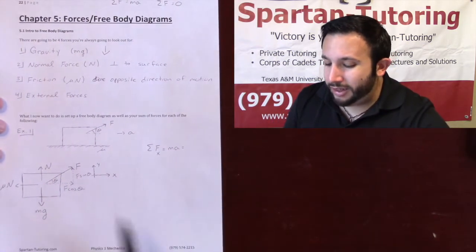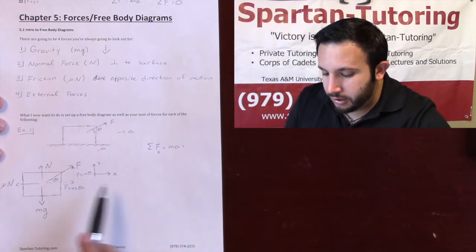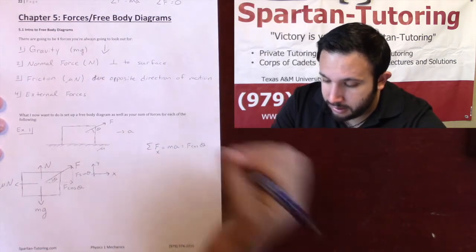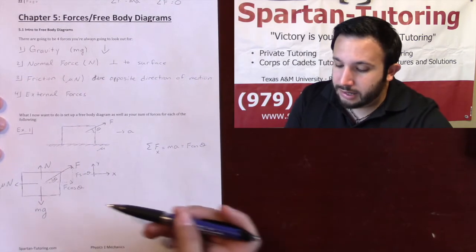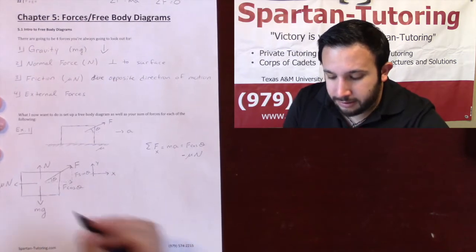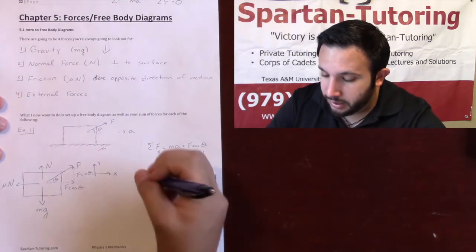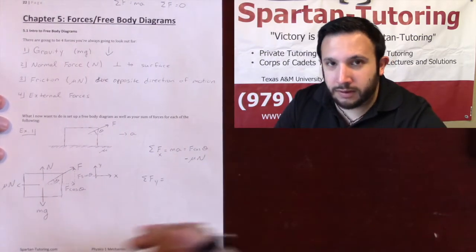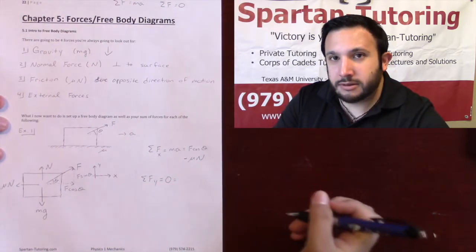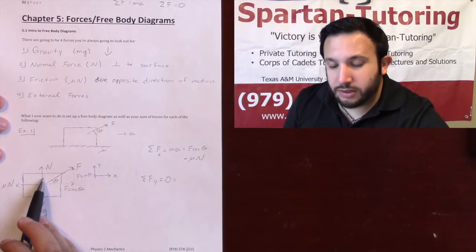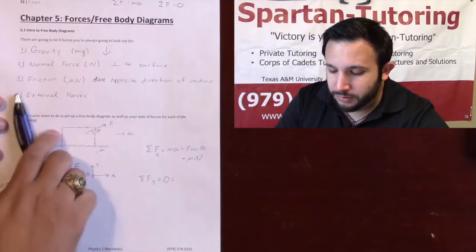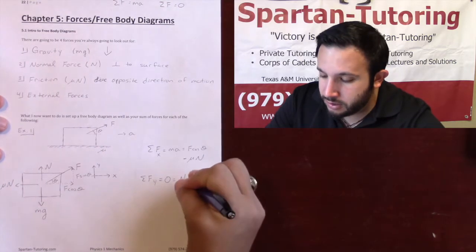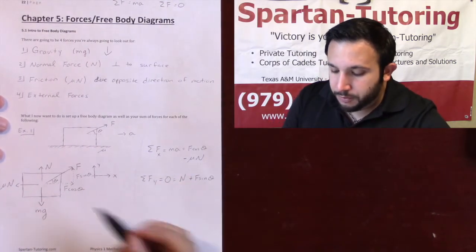Looking at arrows in the x-direction: F cosine theta is going in the positive x-direction, so we have positive F cosine theta. Mu times N is going in the negative x-direction, so minus mu times N. That's it for x. For sum of forces in the y-direction, am I accelerating in y? No — only moving in x — so sum of forces in y equals zero. The normal force is positive N, and F sine theta is also positive.